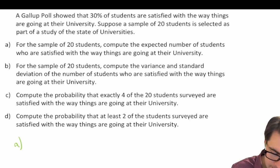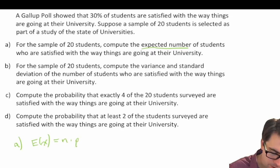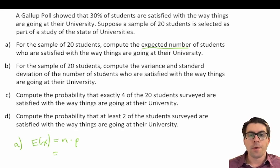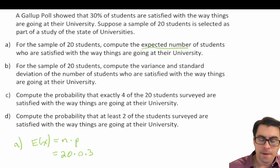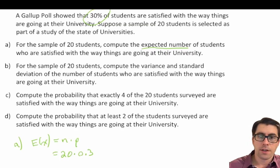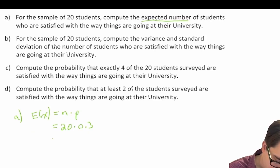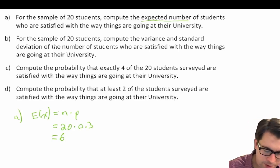We're asked to calculate the expected number, so let's think about expected value. Our expected value is equal to N times P. We're dealing with a binomial distribution — they're either satisfied with the way things are going or they are not. This is a yes or no type of question, so we should automatically be thinking binomial distribution. Our sample size or number of trials is 20, and our probability of success is 0.3, because we're told that 30% of students are satisfied. So N times P, which is 20 times 0.3, gives us an expected number of 6 students.